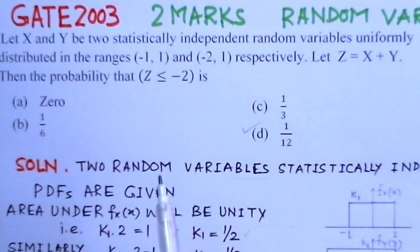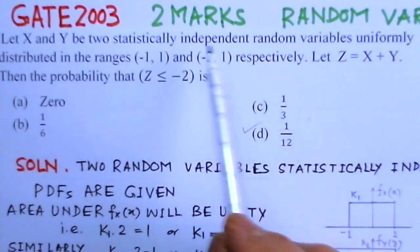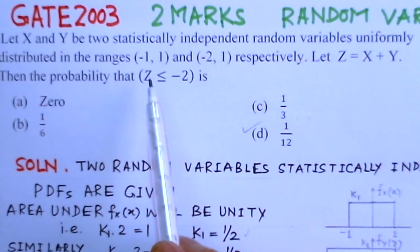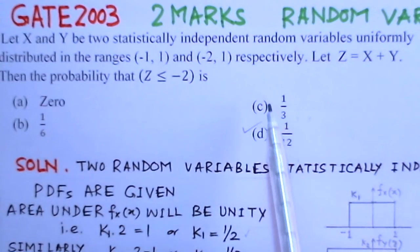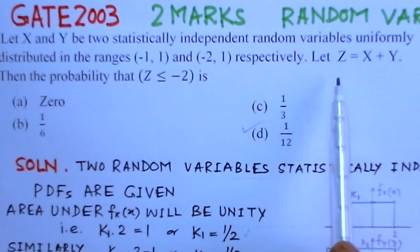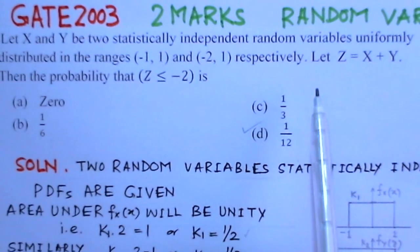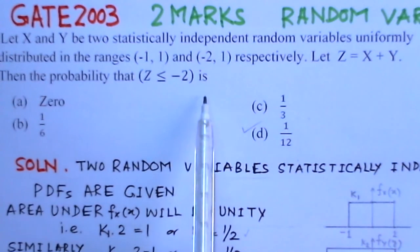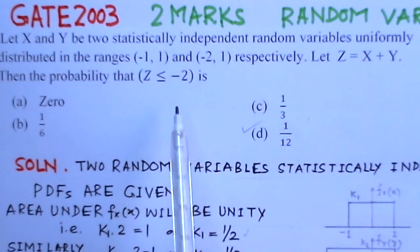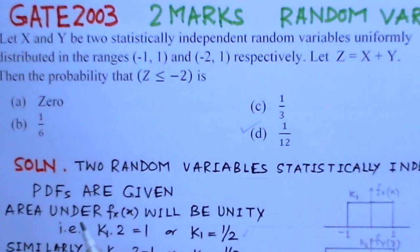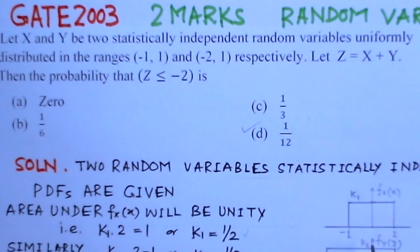We have two random variables X and Y which are statistically independent, and their PDFs are given. They are uniformly distributed over the given ranges. We have to find the random variable Z, which is the summation of these two random variables, and then find the probability that Z is less than minus 2.